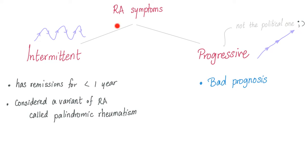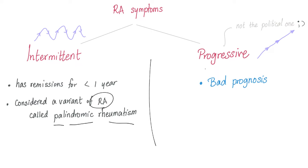Symptoms of rheumatoid could be intermittent — more symptoms, less symptoms, more symptoms, less symptoms — sometimes you have remissions with no symptoms. But the remission lasts for less than one year. If the remission lasts for 10 years, it's not rheumatoid. This variant is called palindromic rheumatism. And we have progressive rheumatoid arthritis, which carries bad prognosis — keeps increasing, like a freight train that never stops.